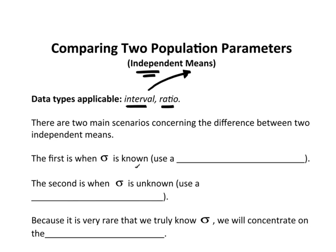There are two main scenarios concerning the differences between independent means. The first is when sigma is known for both groups. In that case, you'd use what's known as a two-sample z-test. The second is when sigma is unknown for one or both, and then we'd use a two-sample t-test.